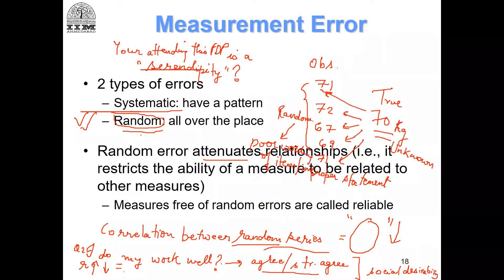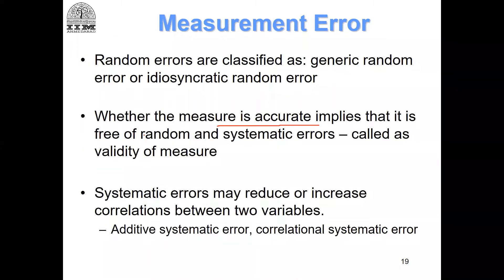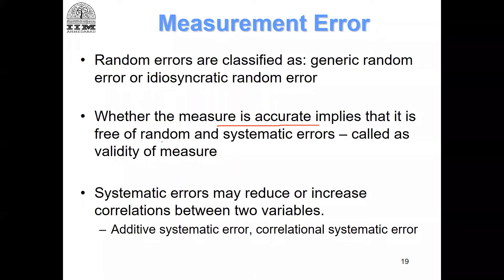Reliability and factor analysis can definitively check random errors. Systematic errors need much more careful, thought-through development of your scales and items. But randomness can be easily checked using reliability testing — by doing reliability testing we tend to rule out random error.